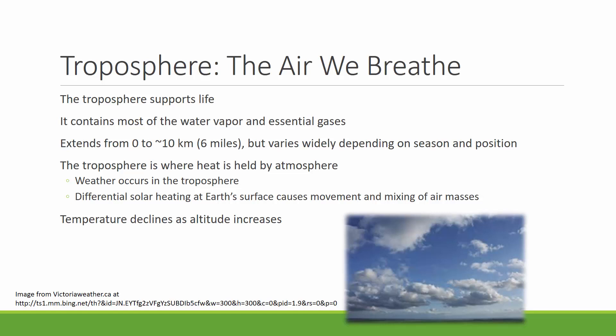The troposphere extends from zero to about ten kilometers or six miles from Earth's surface, though that depends on the season and position where you are on Earth. That's where heat is held in by the atmosphere, and where all the weather occurs because you have differential heating going on. That differential heating can cause movement and mixing of different air masses, causing storms, for example.